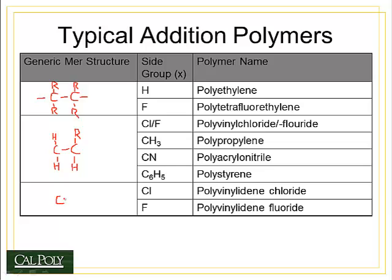Finally, there is another vinyl structure in which two of the side groups are radicals. This gives us polyvinylidene chloride and polyvinylidene fluoride. The '-idene' suffix distinguishes these from polyvinyl chloride, which has only one chlorine instead of two as in polyvinylidene.